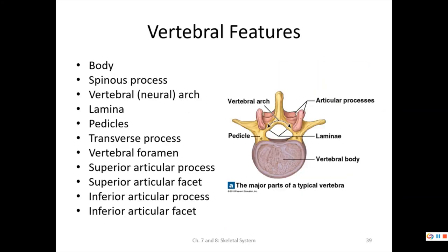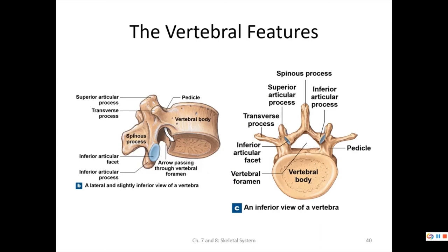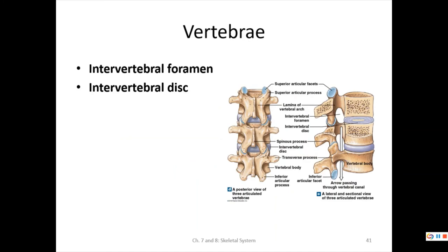Typical vertebral features include the body, spinous process, vertebral or neural arch, laminae, pedicles, transverse processes, vertebral foramen, and superior and inferior articular processes and facets. Note that C1 does not have a body or spinous process. The intervertebral foramen is formed by the overlap between adjacent vertebrae and allows spinal nerves to pass through.